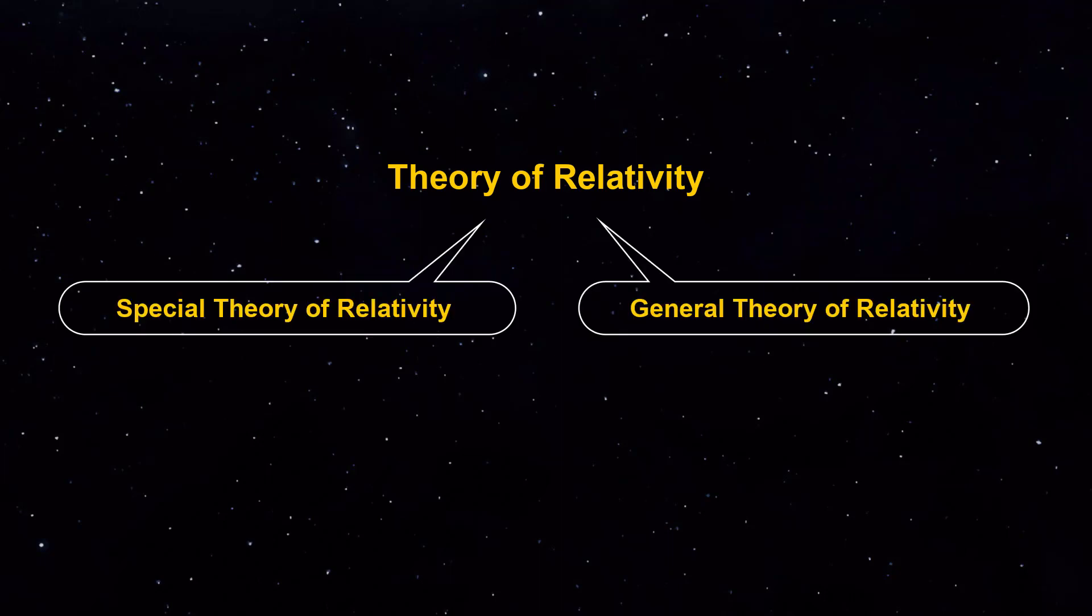There are two main branches of relativity: special theory and general theory of relativity.